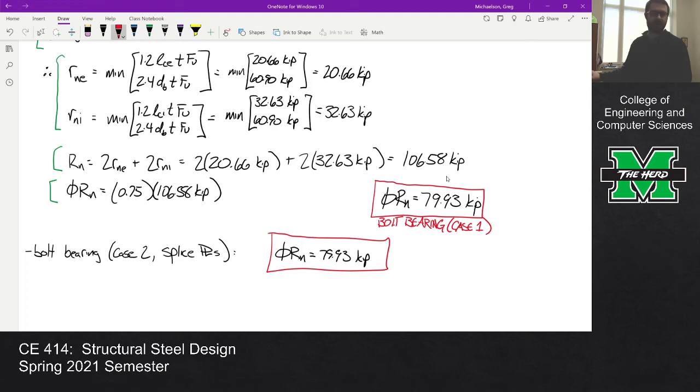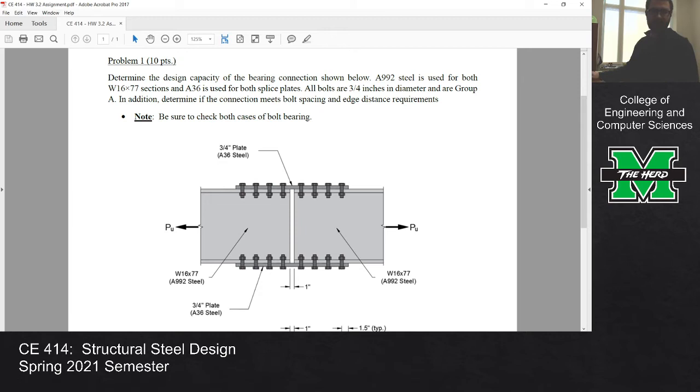That's just by observation. I don't need to do any math. The only time I would need to is if these inputs changed, which unfortunately they are on your homework assignment. If you look at the problem, the plate thicknesses are different - three quarter inch plates for the splice plates and flanges for the rolled shape. Also look at the steel grades: the splice plates use A36 steel, the rolled shape uses A992.